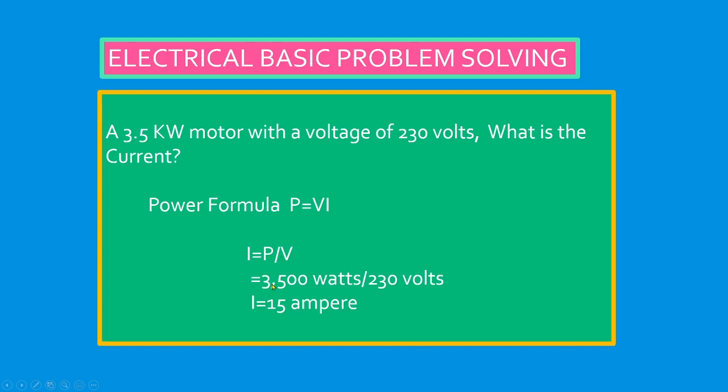3,500 because we know that one kilowatt is 1,000 watts. So 3,500 watts over 230 volts. So the answer is current equals 15 amperes.